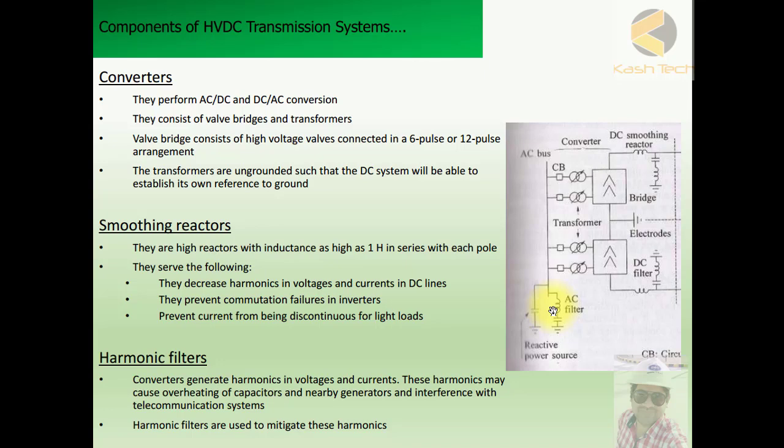Next we have harmonic filters. Converters generate harmonics in voltages and currents, which may cause overheating of capacitors and nearby generators, and interference with parallel communication systems. Harmonic filters are used to mitigate these harmonics. Since harmonics are multiples of the fundamental frequency, the filters are used to eliminate these harmonic components and make the system smooth.